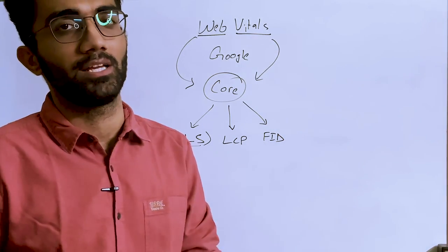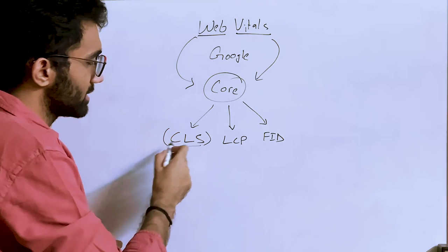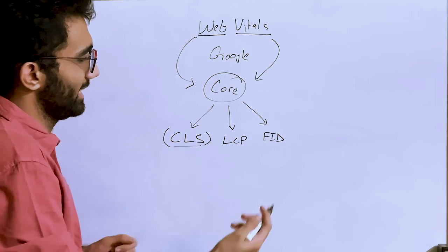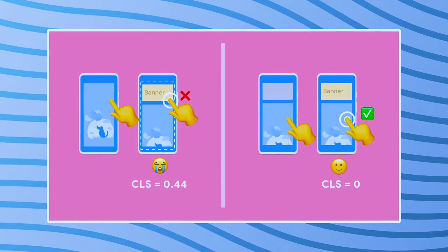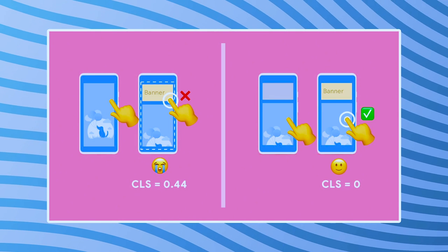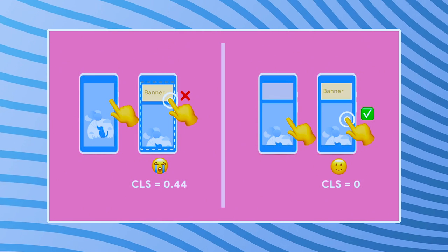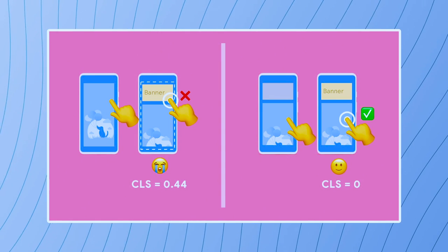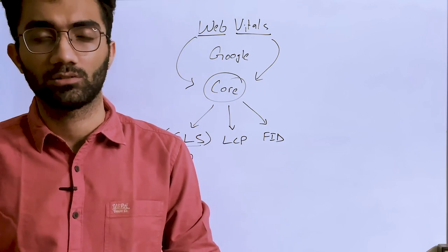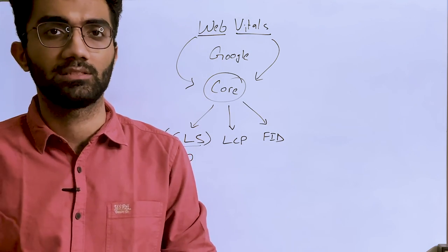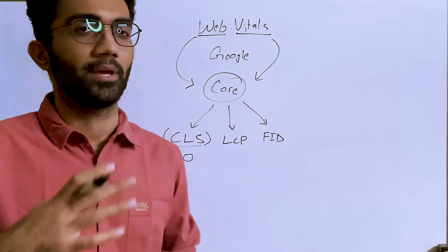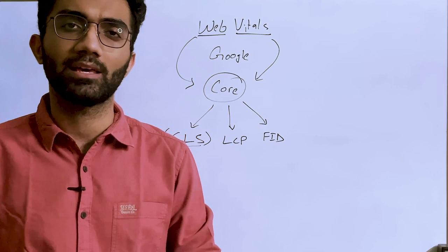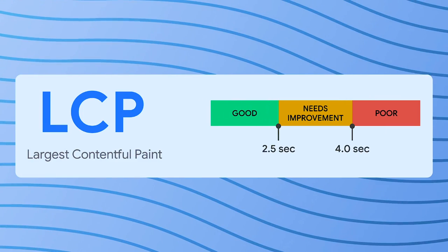If your layout is changing rapidly or even slowly, it becomes unpredictable for the user to interact with your application. A CLS of zero means that once your page is loaded, it pretty much does not change without any user interaction — no ad banners, no iframes popping in and out of existence, which is ideal for user experience.